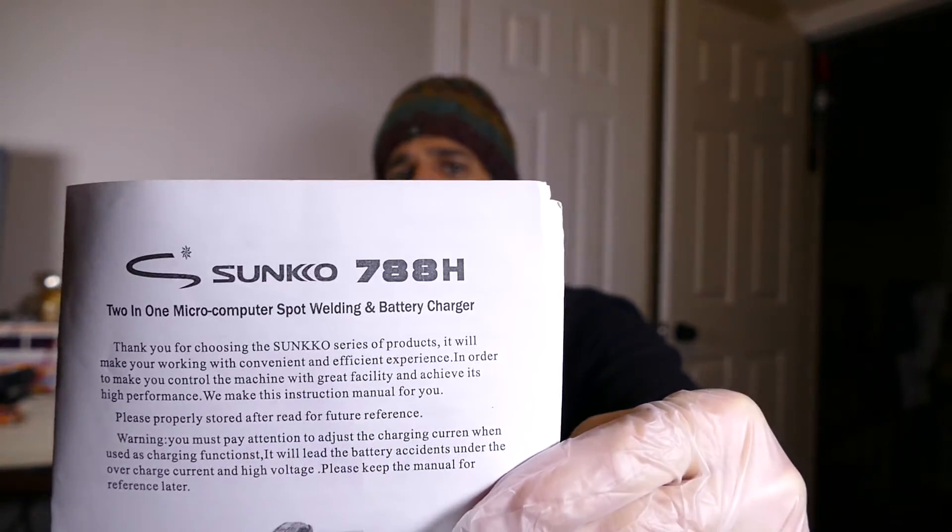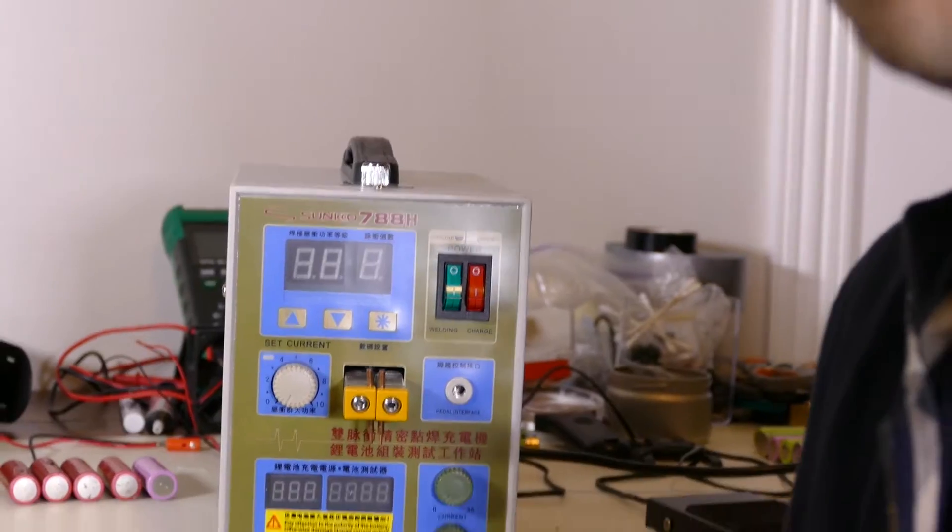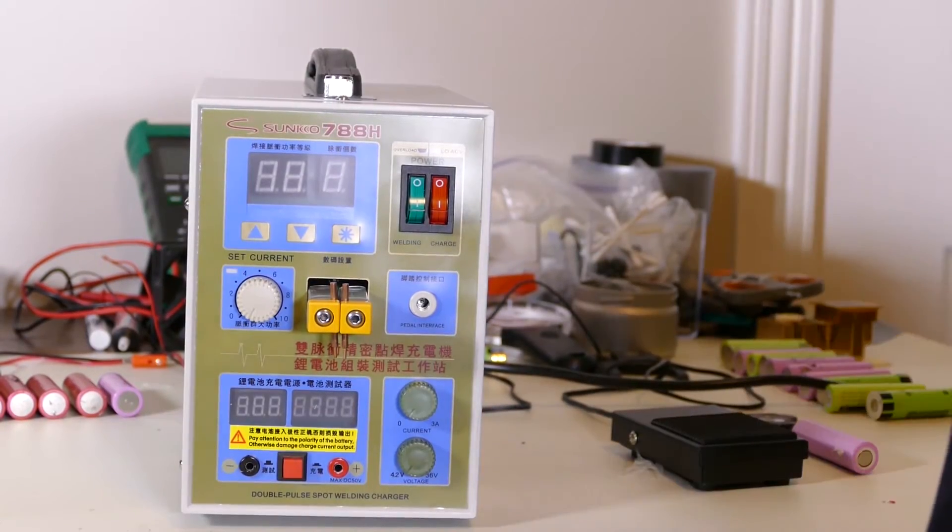Today we have a new delivery from our friends at AliExpress, Sunco 788H. This is a 2-in-1 microcomputer spot welding and battery charger. It does two things, apparently. Here it is. Features include, let's go through some of the specs.